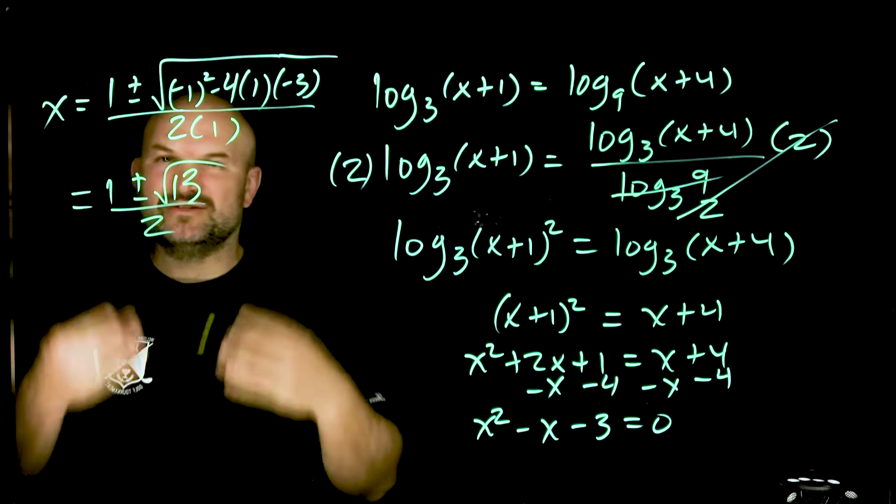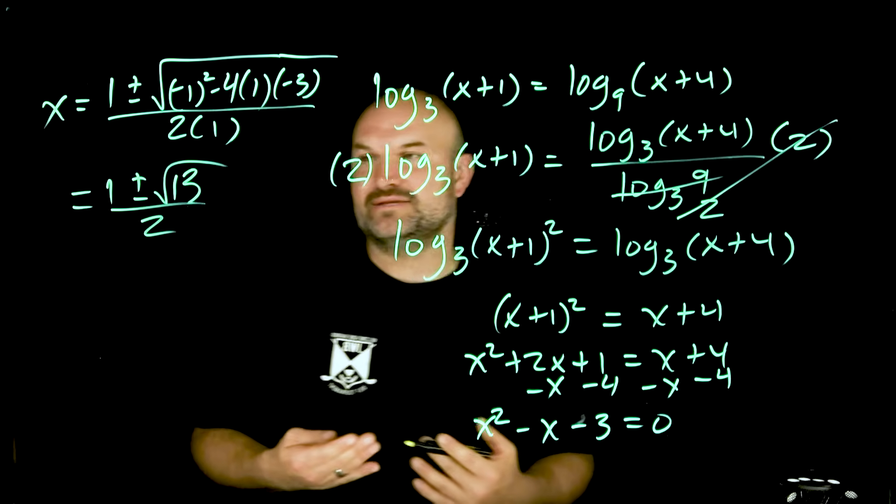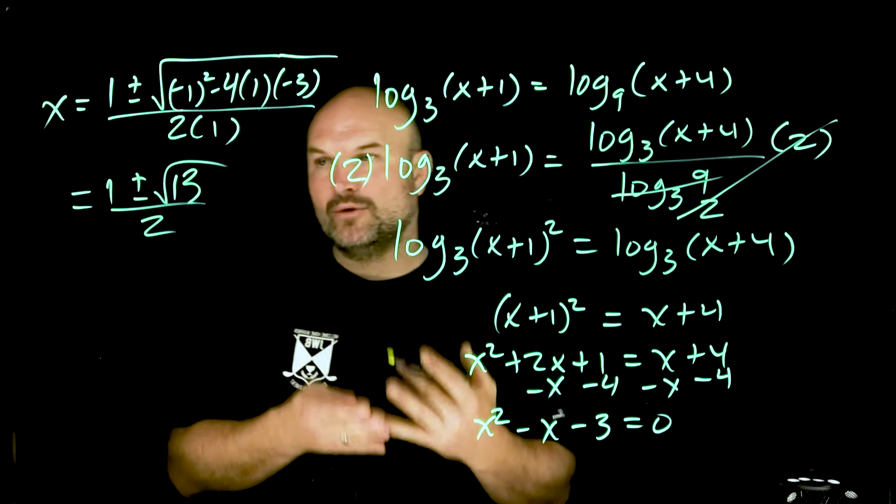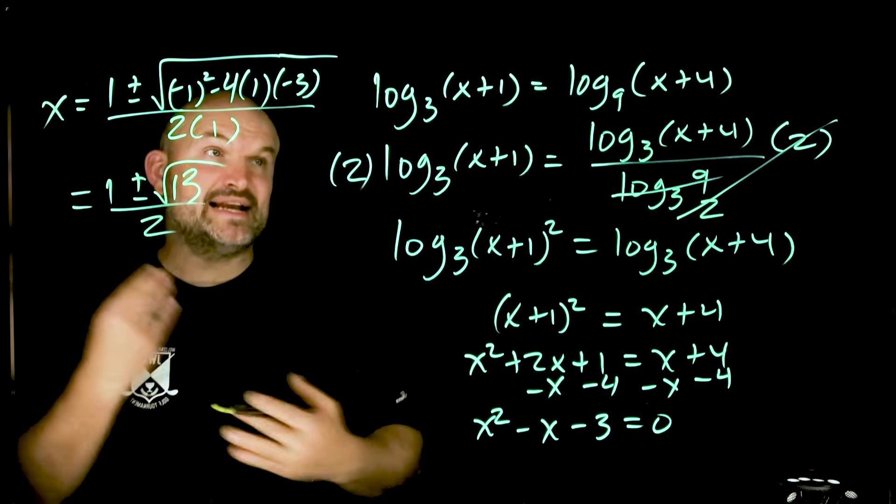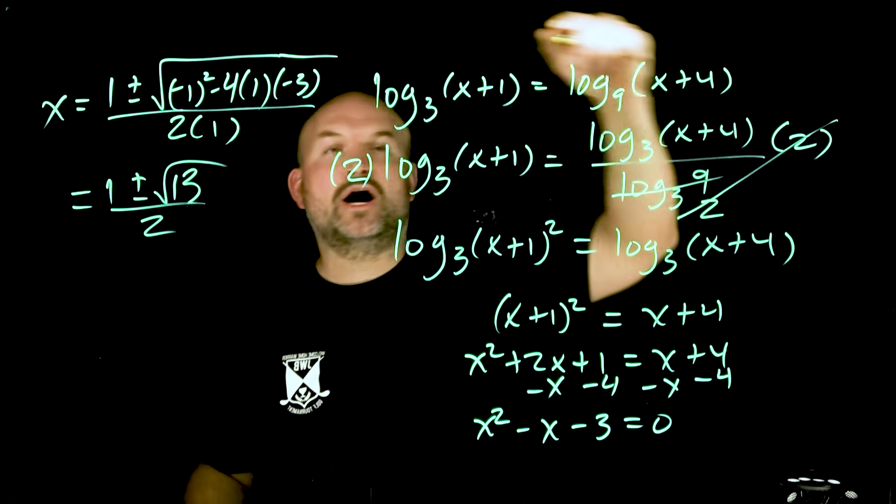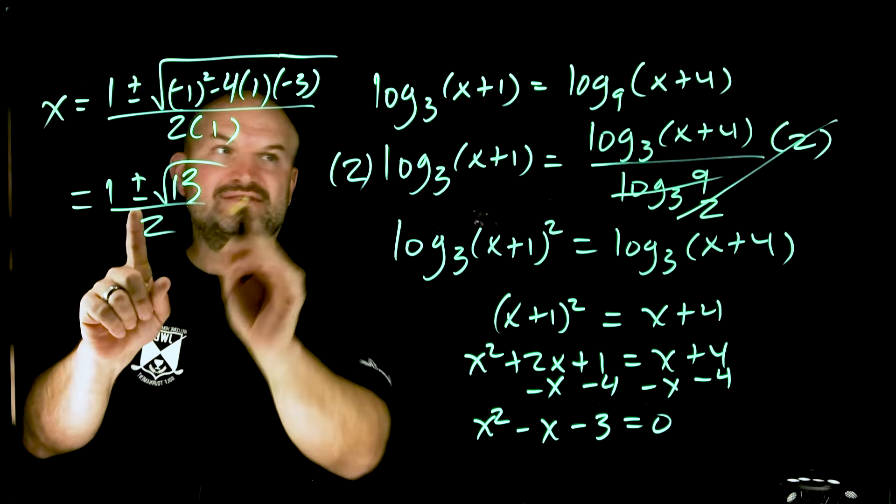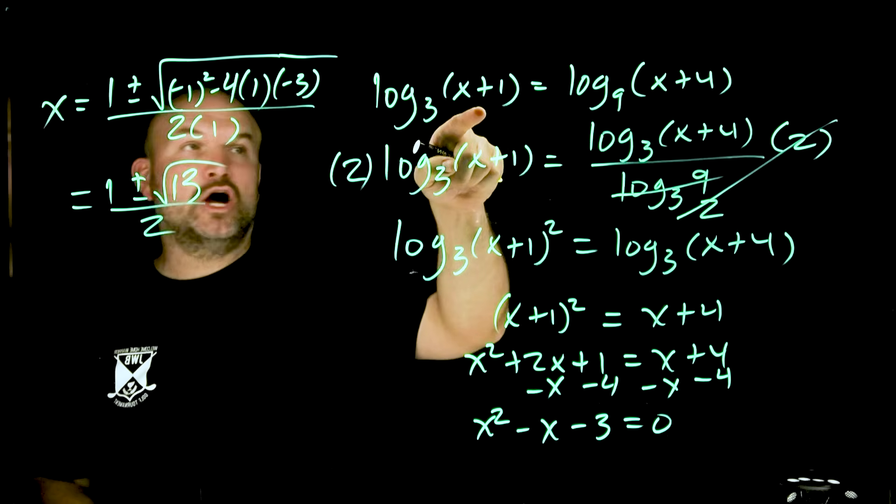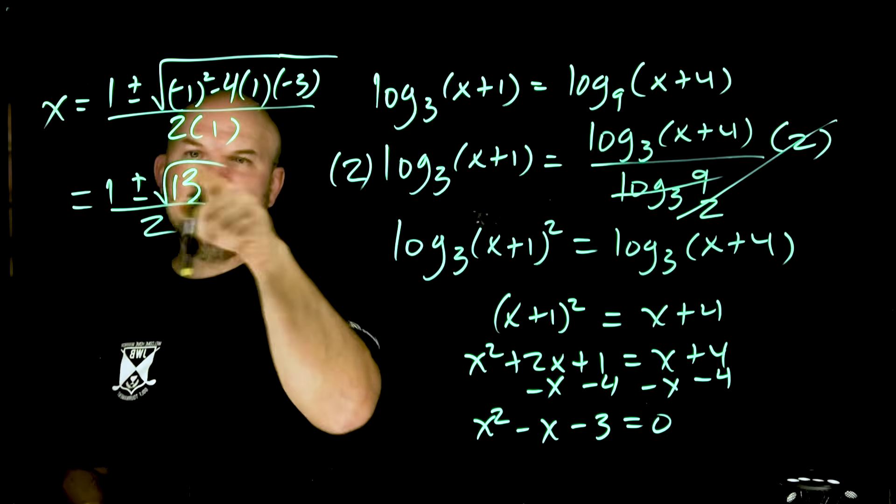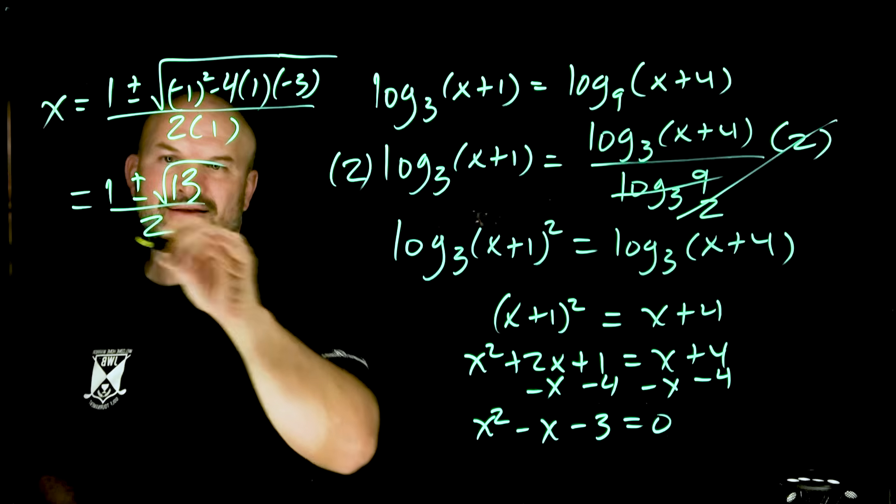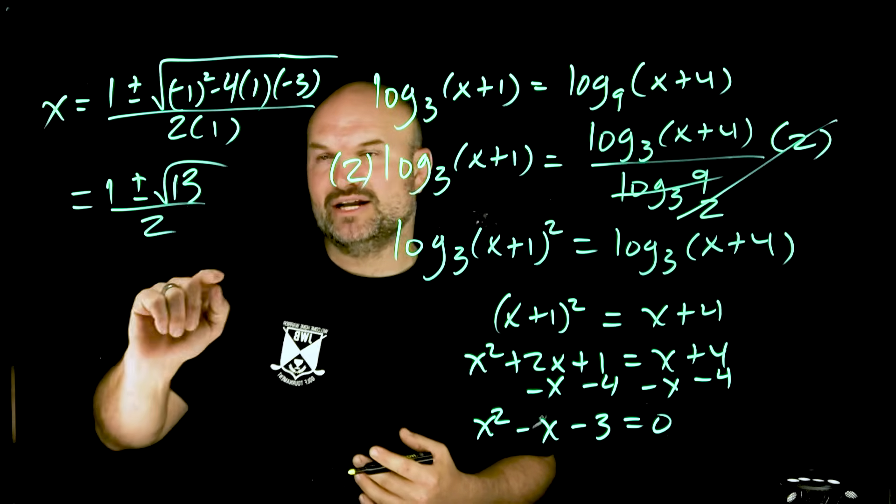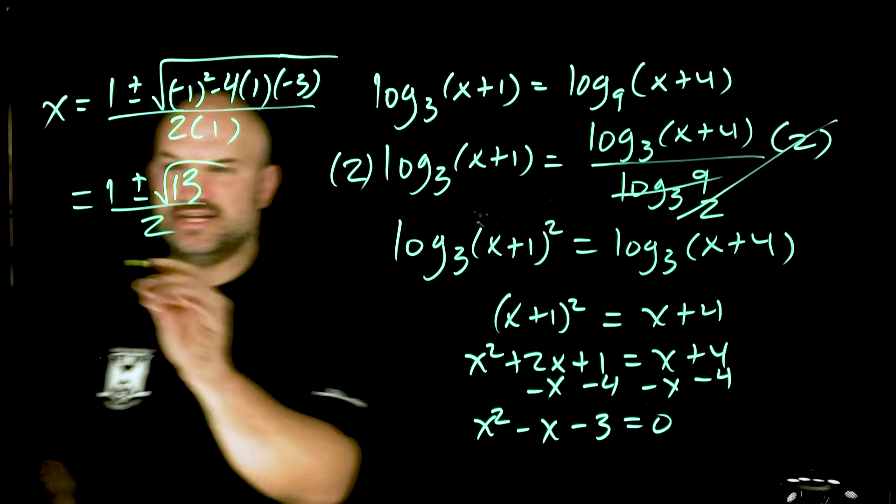You can divide that 2 into both of those, but either way our main goal here is to be able to identify now: are we actually going to get an extraneous solution? Right? We know that our argument inside of our logarithm cannot be negative, so these values have to be either larger than a positive 1. And we know that 1 plus the square root of 13, that's not going to be too bad, like that will work. But one thing I do want to check is the 1 minus the square root of 13.